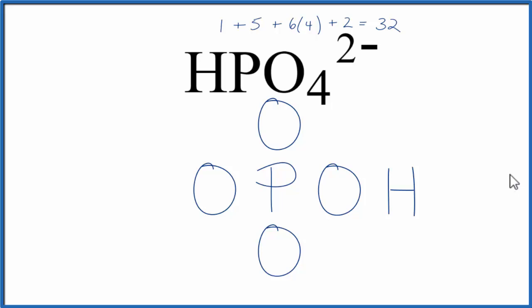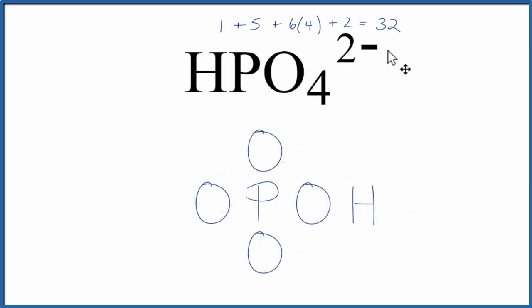Let's shrink it down to give ourselves a little bit more room. So we have 32 total valence electrons. Let's put electrons between the atoms here to form chemical bonds. So we've used 10 valence electrons.